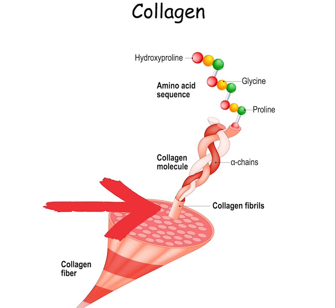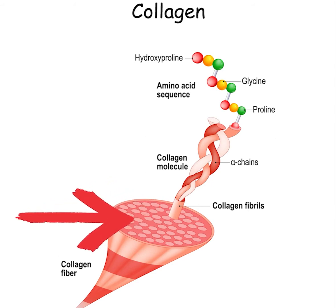Those strands then coil around each other to form triple helixes. Finally, those helixes connect end to end and stack on top of each other into bundles called fibrils. Some types of collagen fibrils, gram for gram, are stronger than steel.